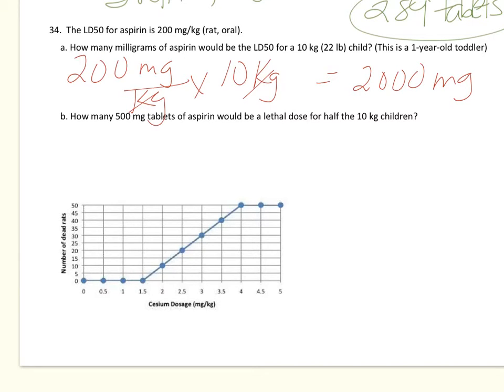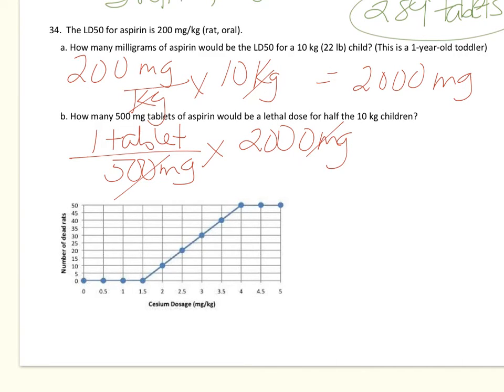It's going to be 2,000 milligrams would kill half the children weighing 10 kilograms. Now per 500 milligram tablet, so one tablet is 500 milligrams. We multiply that like this and when we cross this out we get the problem we set up before. 500 goes into 2,000 and our milligrams cancel out.